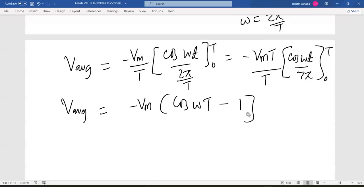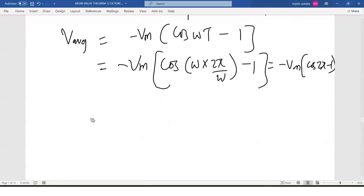This is going to be the same as negative Vm times cos of omega times 2π out of omega minus 1. And this is the same as negative Vm times cos(2π) minus 1. So the V_average will equal to negative Vm into: cos(2π) is the same as cos(0), and that is the same as 1, so 1 minus 1, you get 0.